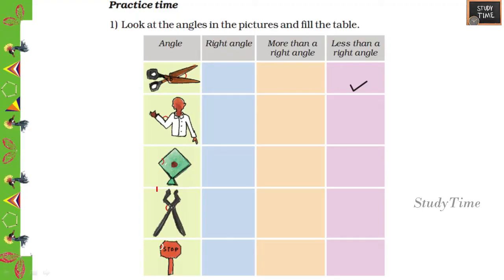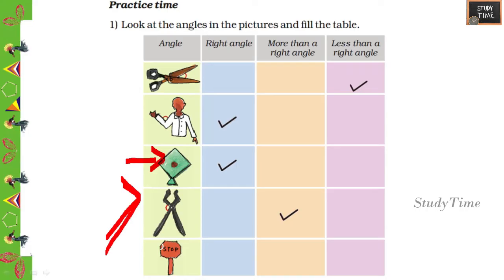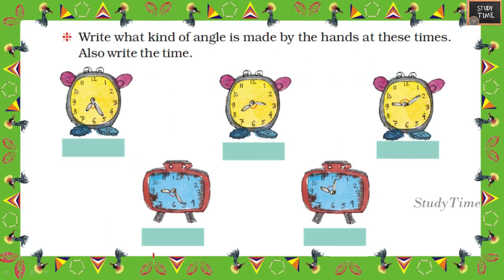Practice time — look at the angles in the pictures and fill the table. For the first shape, it is an acute angle, less than 90 degrees. For the hand, it is a right angle. In the kite, the angle is also a right angle. The next shape is more than a right angle because it is somewhat slanting, so it is an obtuse angle. The last one is also more than a right angle.